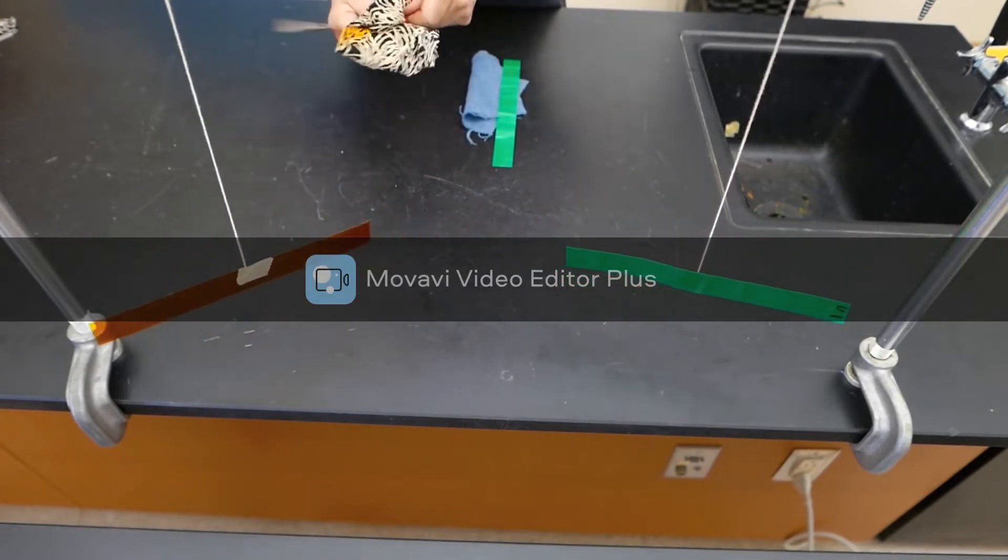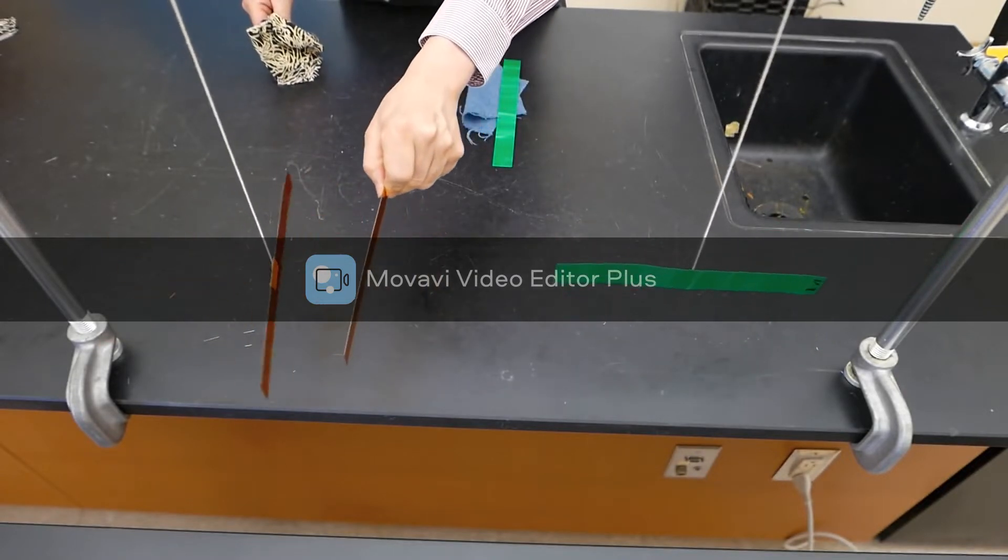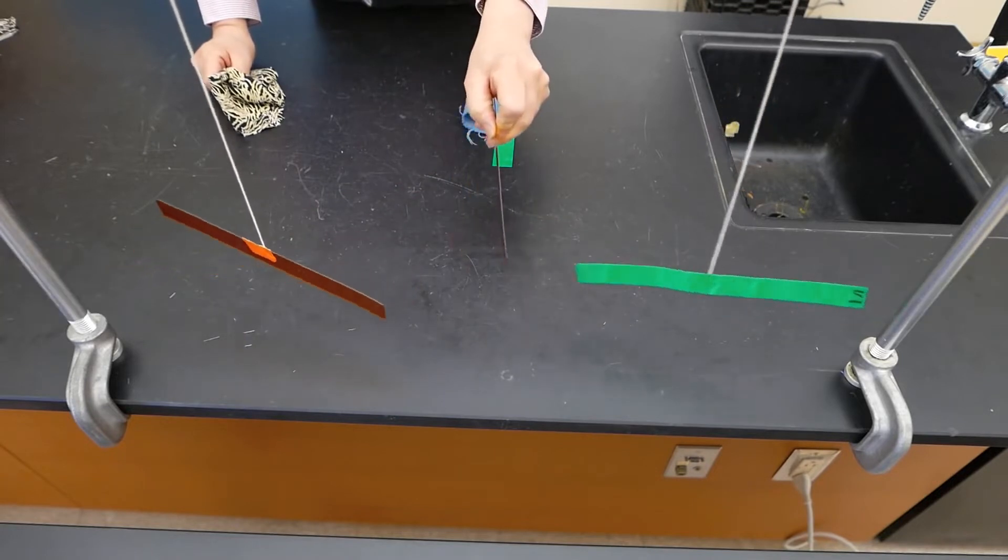Now, let's try it with the two acetate strips. Once again, they push away. But if I bring it near that vinyl strip, once again, there's our attraction.